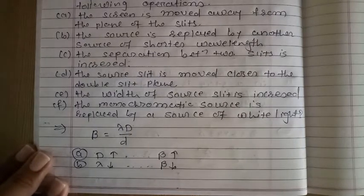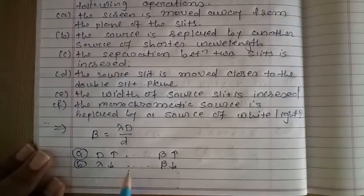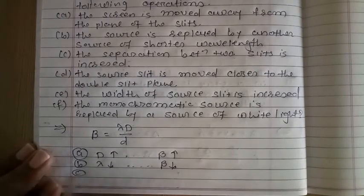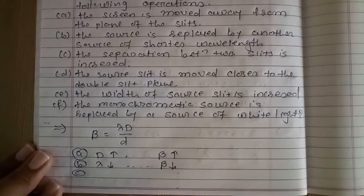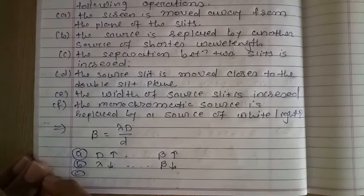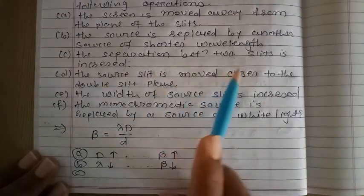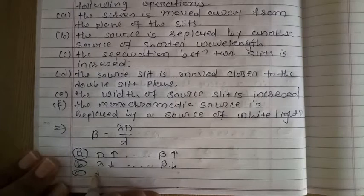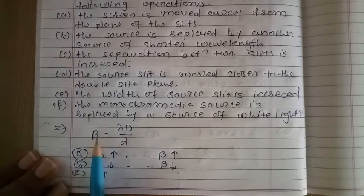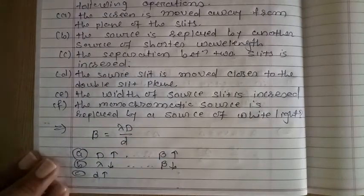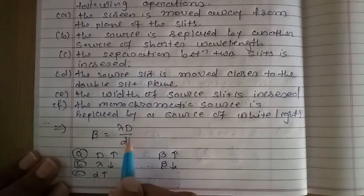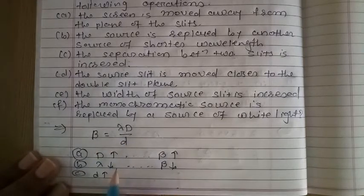As the source is replaced by another source of shorter wavelength, lambda decreases, so beta also decreases. For C: The separation between two slits is increased. The distance between slits is small d. As the separation increases, small d increases. In the formula beta equals lambda capital D upon small d, small d is in the denominator. So as small d increases, beta decreases.